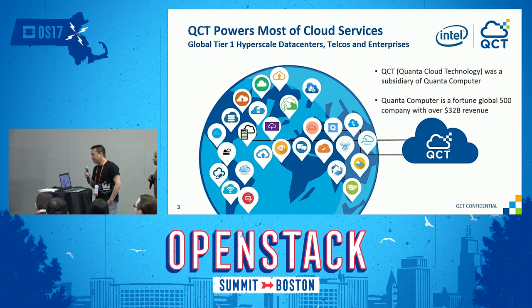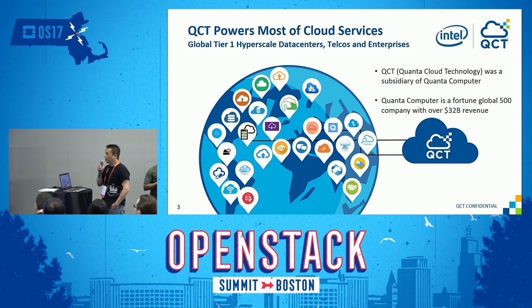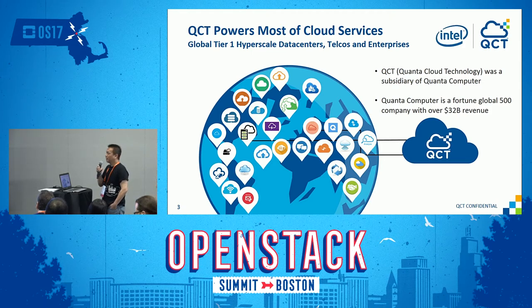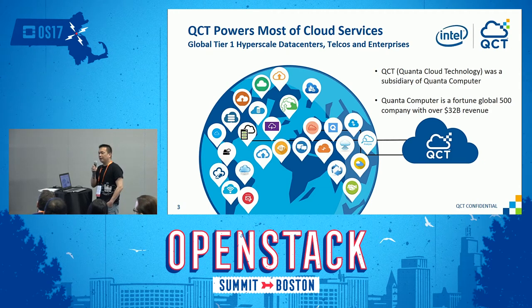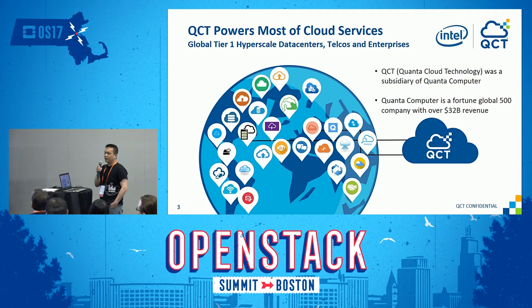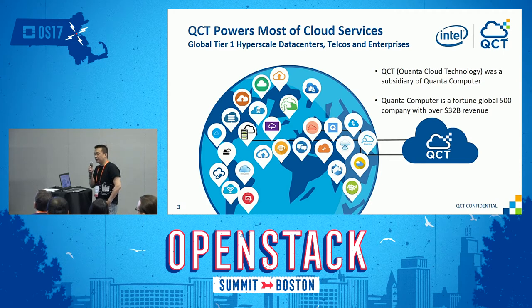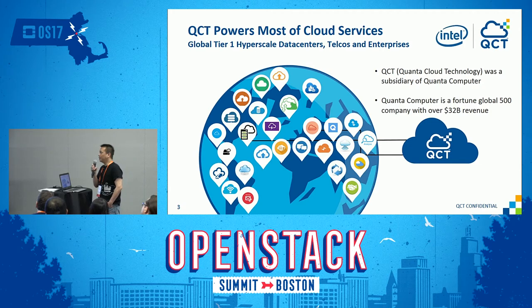On this slide I want to talk about what we are and what we do. QCT is a global data center provider. Quanta is a hardware manufacturer company, and QCT is the subsidiary of Quanta. We deliver a total turnkey solution for customers. As technology partners, we work very closely with Intel to deliver software-defined solutions and platform optimizations.